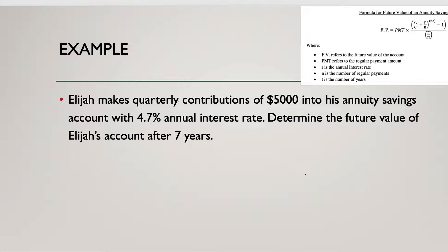Here's our first example. Elijah makes quarterly contributions, so right away I know my N value is going to be 4, because there are 4 quarters in a year. Every quarter he's contributing $5,000 — that is my payment. He contributes $5,000 quarterly into his annuity savings account with a 4.7% annual interest rate. We need to determine the future value after seven years, so T equals 7.